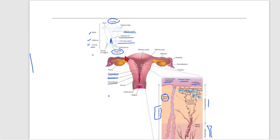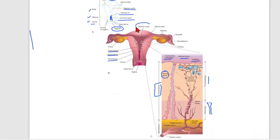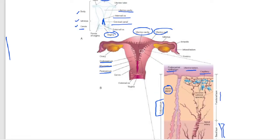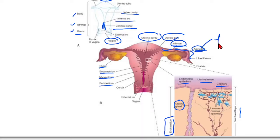This is the internal os, and this is the cervical canal. In the uterine cavity region, you can see the isthmus and the ampulla of the fallopian tube, along with the ovary. The fallopian tube is composed of the ampulla and isthmus, and fertilization takes place in the ampulla.